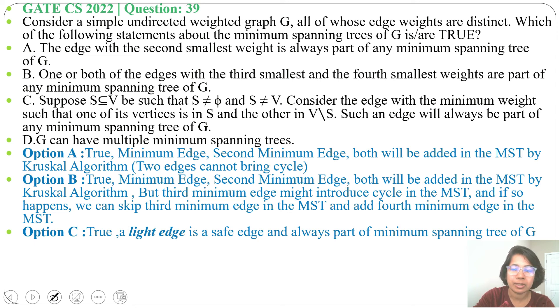So the edges that cross the cut, from that whichever weight is lowest, that is the light edge and that is safe for minimum spanning tree. Next option D: G can have multiple minimum spanning trees. This is false. As you can mark here, it is written weights are distinct. When weights are distinct there will be only one minimum spanning tree possible. So this is false.